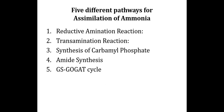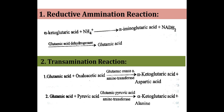The first pathway is the reductive amination reaction. When glutamic acid is synthesized by direct incorporation of ammonia into alpha-ketoglutaric acid by the enzyme glutamate dehydrogenase, this reaction is called reductive amination.